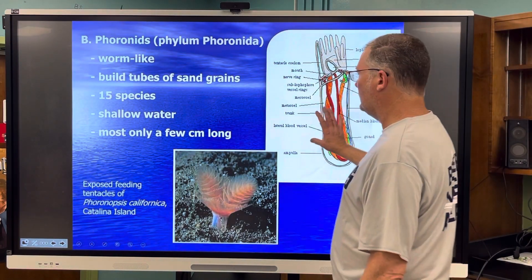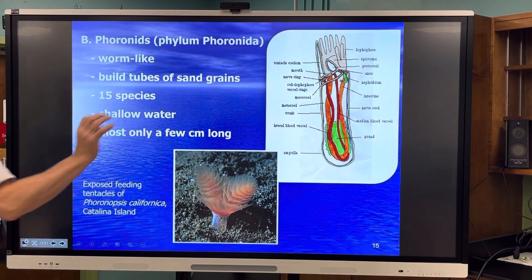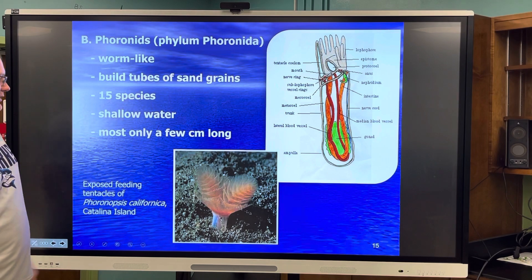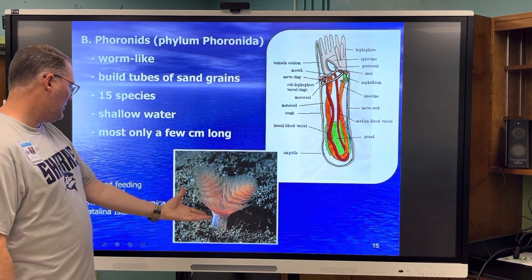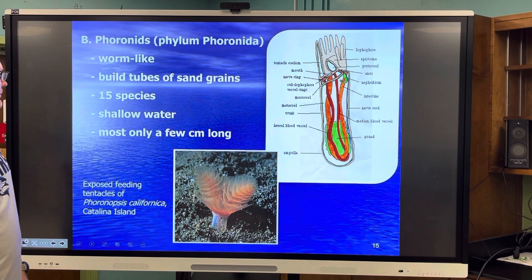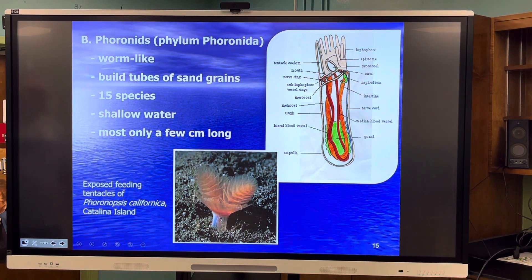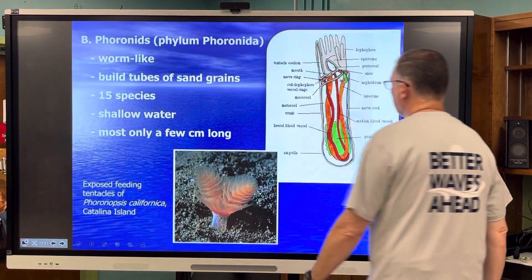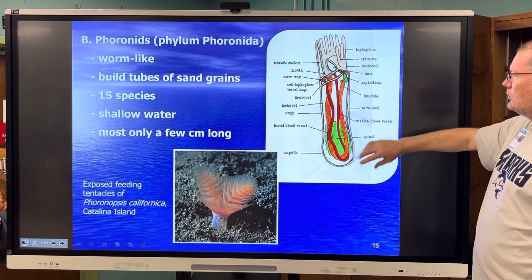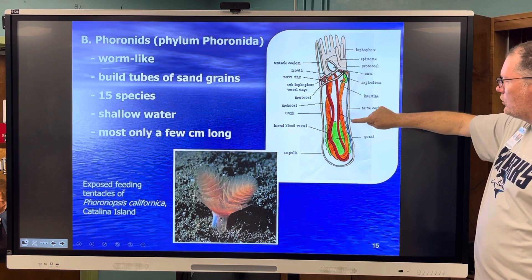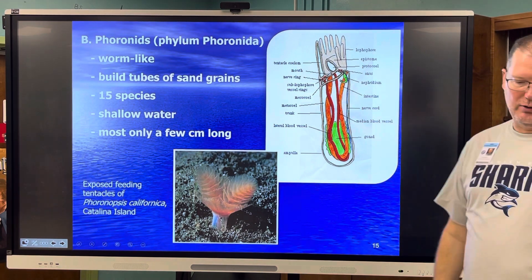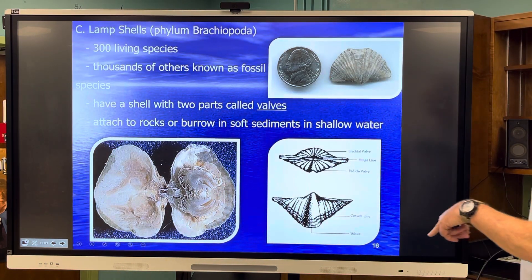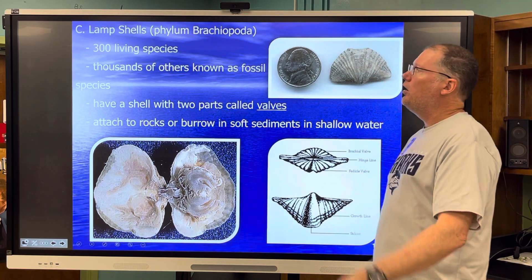Phoronids are very similar — they're worm-like but not quite a worm. They build tubes of sand grains. Here's one with its feeding tentacles extended. They live in shallow water and are mostly just a few centimeters long. We're going to talk about some of the other structures here, like the nerve cord, coming up soon in the next set of notes.